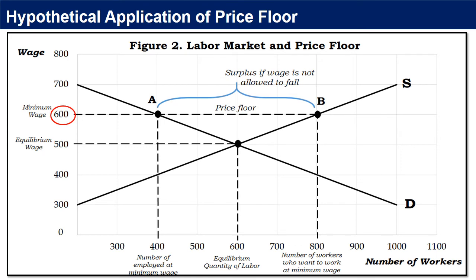Suppose the government releases a new policy setting the minimum wage rate at 600 pesos. Remember that the price floor is always set above the equilibrium point. This policy would make low-income workers better off with a higher income. At the equilibrium wage of 500 pesos, there are 600 available workers to be employed, meaning labor supply and labor demand meet at the equilibrium wage. At the minimum wage of 600 pesos, 800 workers are available for hire, but only 400 workers were employed, creating a surplus or excess supply of 400 workers (800 minus 400).